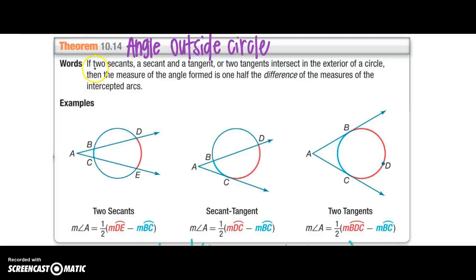So we're either going to have two secants, a secant and a tangent, or two tangents that intersect in the exterior of the circle. So notice angle A in all three of these will be outside the circle. Then the measure of the angles forms is half the, and the other two we're adding, this one we're going to subtract half the difference of the measure of the intercepted arc.